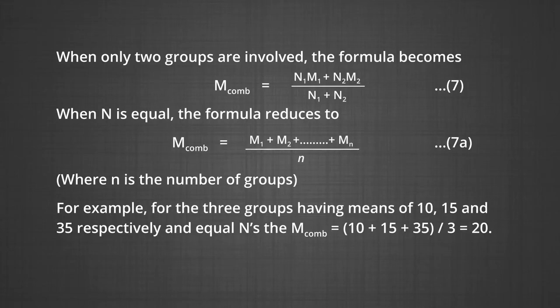For example, for three groups having equal n's and means of 10, 15, and 35 respectively, the combined mean equals (10 plus 15 plus 35) divided by 3, which equals 20.